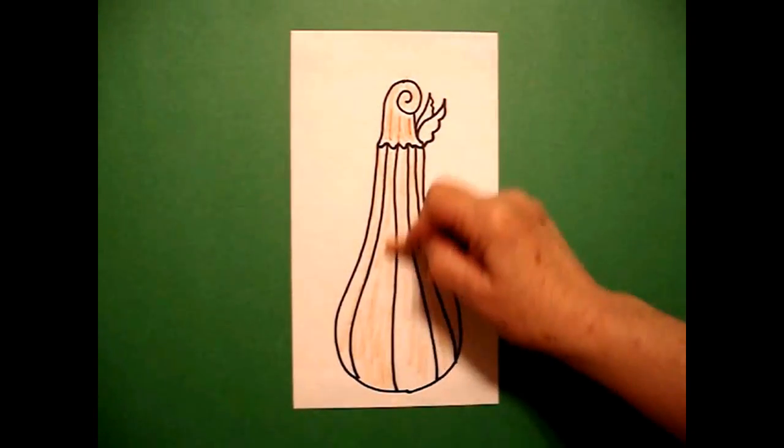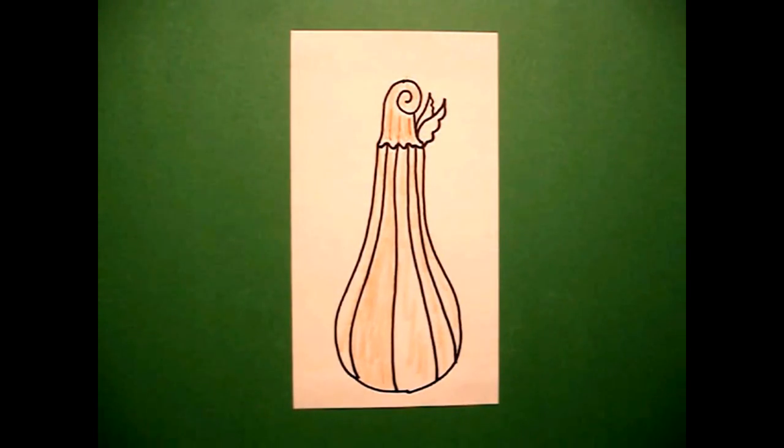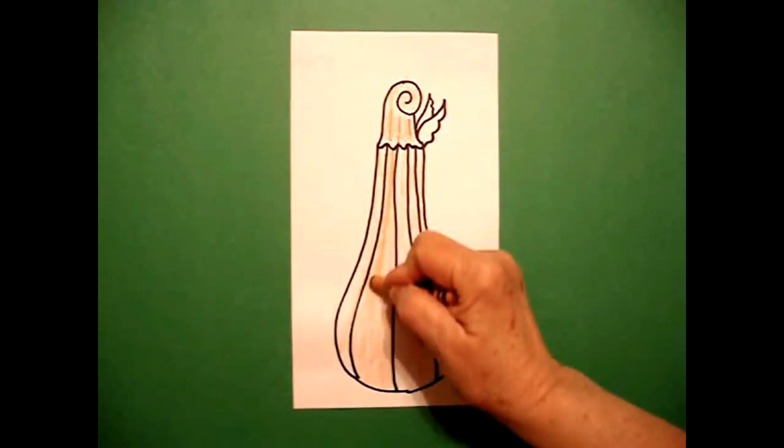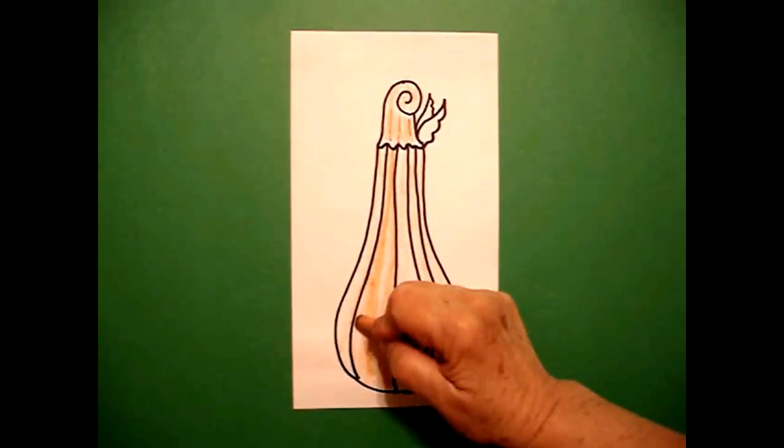And once I have that all colored in, I'll show you on this one section. I come back with a darker color and I draw from top to bottom a contrasting color down over it.